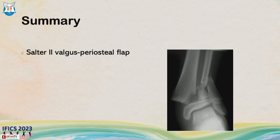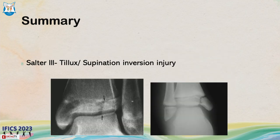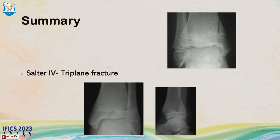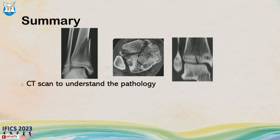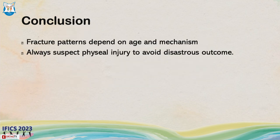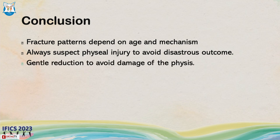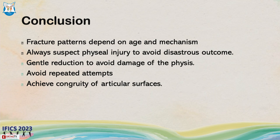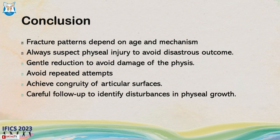In summary: for Salter-2 think about the periosteal flap; for Salter-3 think about the tilo fragment and intra-epiphyseal screw direction; for Salter-4 and triplane fractures you need epiphyseal and metaphyseal screws. A CT scan may be needed to understand the pathology. Fracture patterns depend on age and mechanism. Always suspect a physeal injury, perform gentle reduction to avoid physis damage, avoid repeated attempts, achieve articular congruity, and maintain careful follow-up to identify any growth disturbance.